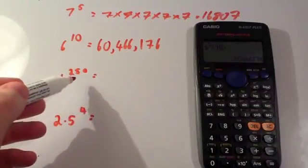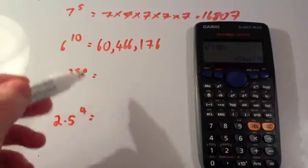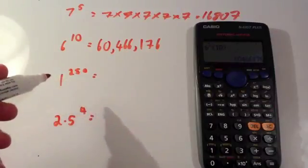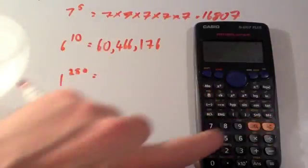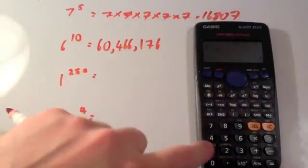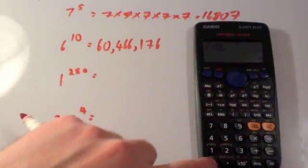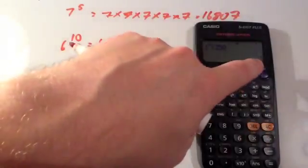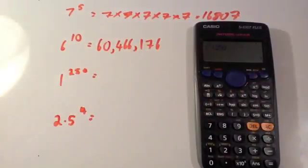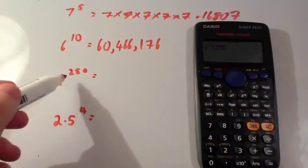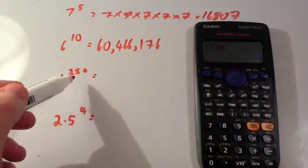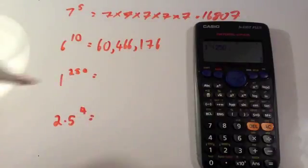Now 1 to the power of 250 — this is a bit of a trick question. Notice what happens on the calculator: 1 to the power of 250 is 1. Of course it's 1, because 1 times 1 is 1, times 1 is 1. If you do 1 to the power of 250, it's just 1s multiplied together, so the answer is 1.